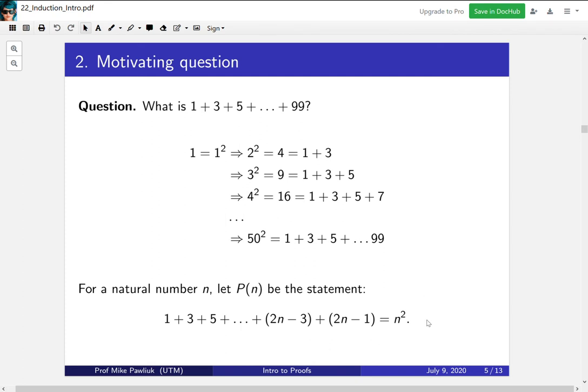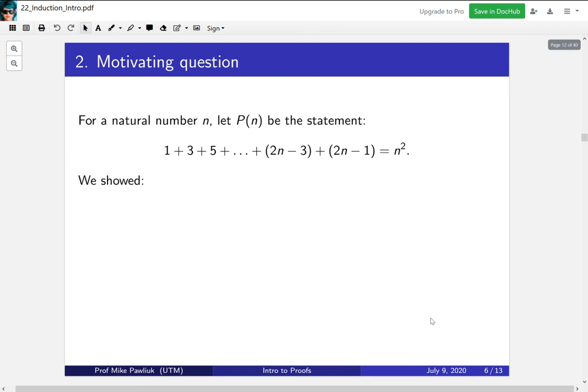So let's take a close look at what we actually showed. So we proved p(1), p(2), p(3), and p(4) are true. So we showed that if you put in n = 1 here, n = 2, n = 3, or n = 4, this is an honest-to-goodness equality.